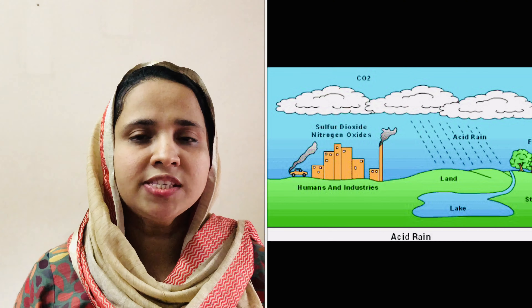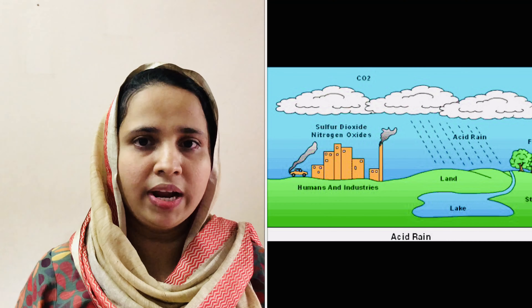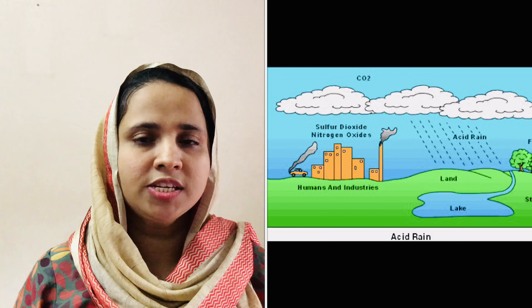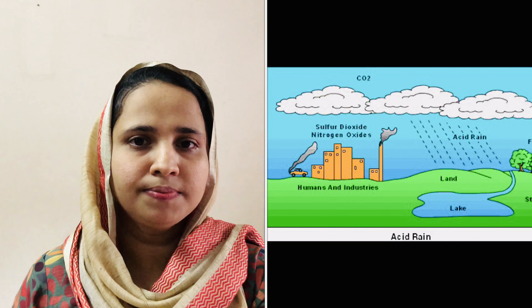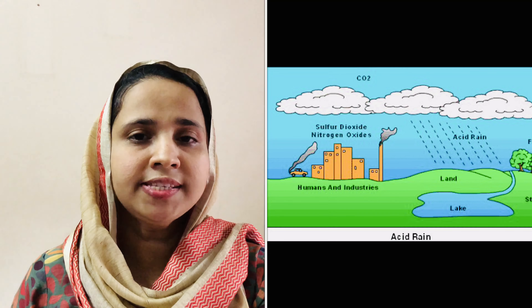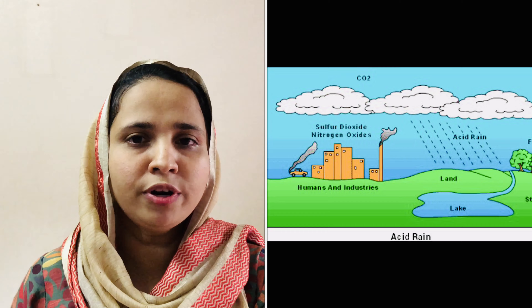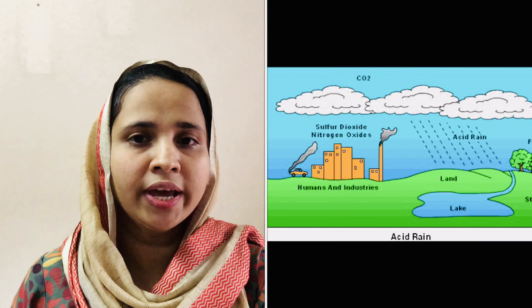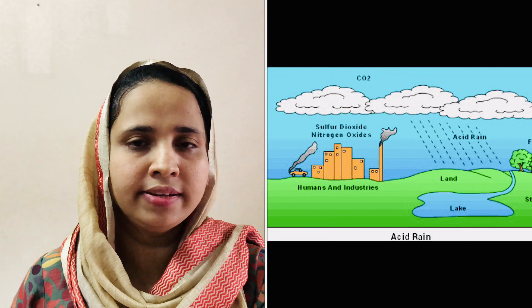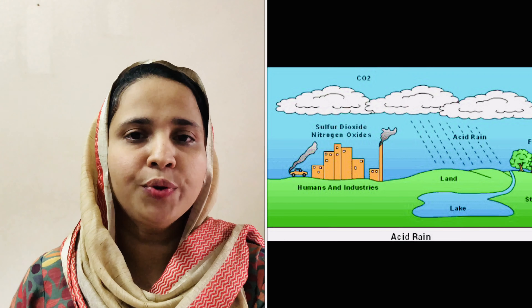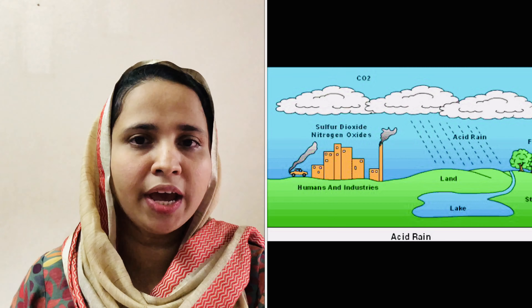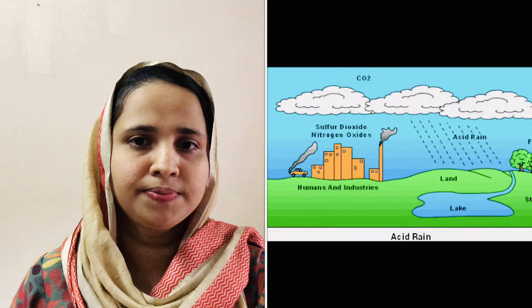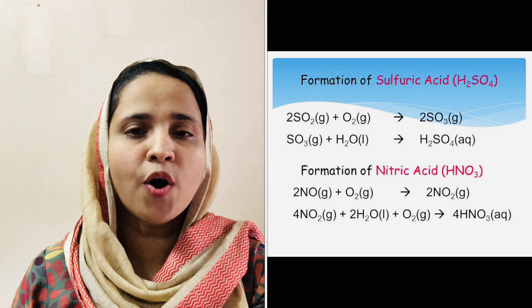These conversions occur through a series of chemical reactions in the presence of light, water, oxygen, heavy metal ions, and organic oxidants in the atmosphere. These acids come down to the earth's surface through rain, snow, fog, etc. and constitute what is known as acid rain. It is thus a major secondary effect of air pollution.